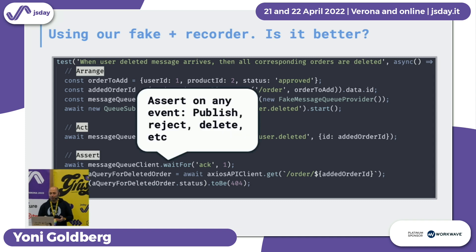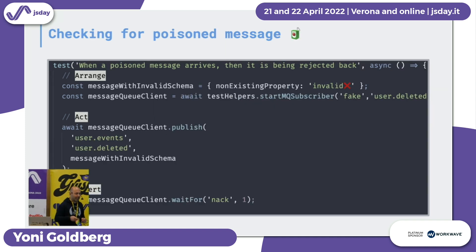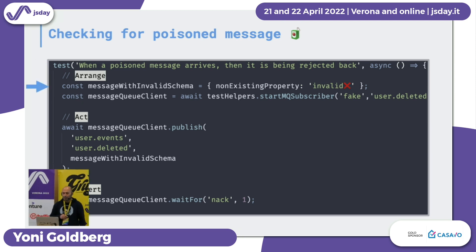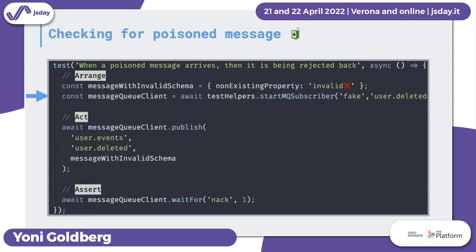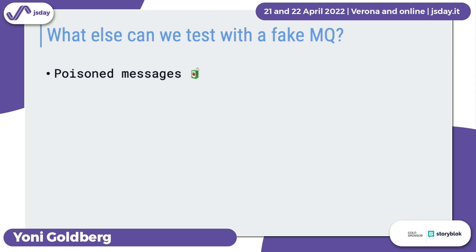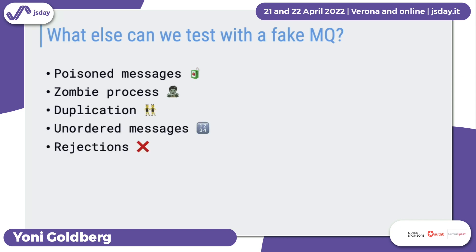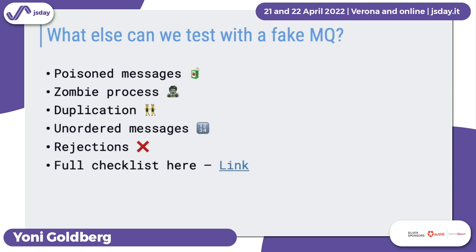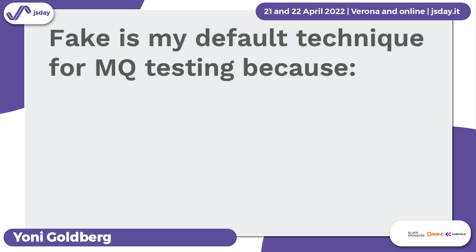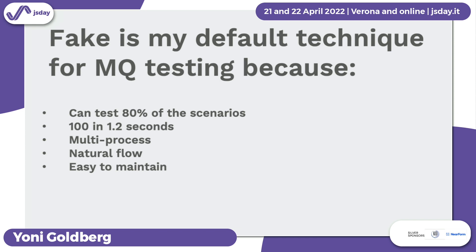Going with this approach, we can test a lot of message queue scenarios. One more example: a poisoned message — a nice name for invalid messages. When we have a poisoned message, we want to ensure our code is not crashing or looping but rather just rejecting it. We declare an invalid message, start the queue, publish that poisoned message, and assert that it was rejected. With this pattern, we can test many risks: poisoned messages, zombie processes where the queue was unable to start and listen, duplication, unordered messages, rejection. If you're interested in a full checklist, you'll find it in the slides. The fake approach is my default because it lets you test most risks quickly in a multi-process test runner and is easy to maintain.